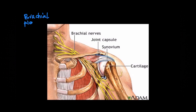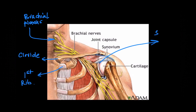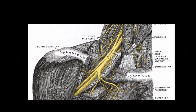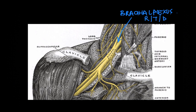The brachial plexus starts as roots from the upper part of the neck and comes together going downwards towards the clavicle. It passes between the clavicle and the first rib to enter the upper part of the chest, lying medial to the shoulder joint, where it gives many branches — the axillary nerve being the terminal branch with innervation to the shoulder joint. As can be seen, the brachial plexus initially starts as roots between the two interscalene muscles and traverses downwards to form trunks, then divisions, then cords.